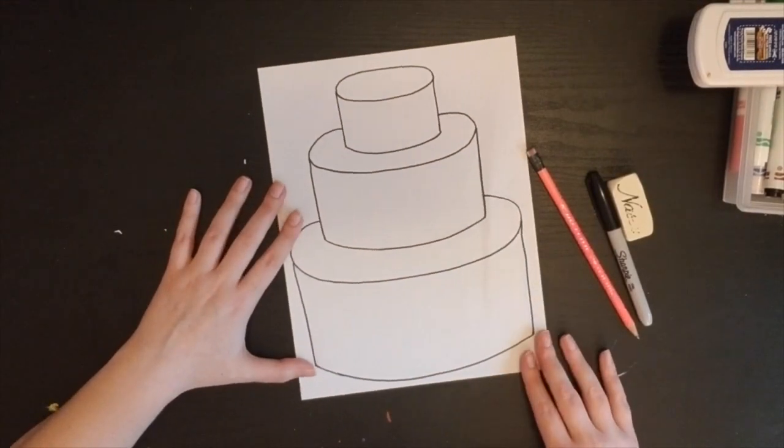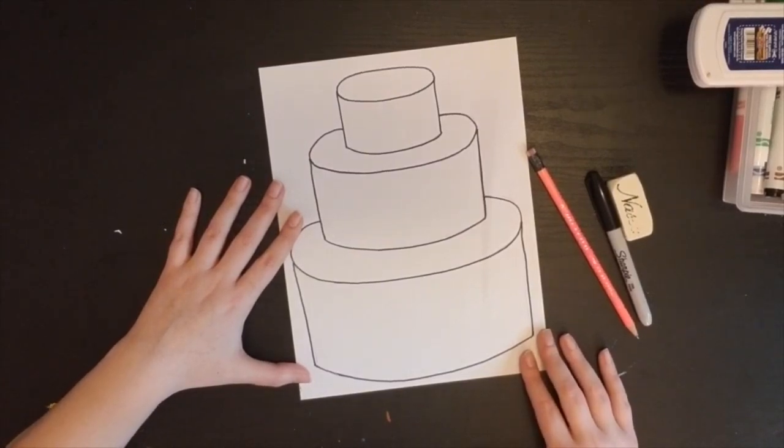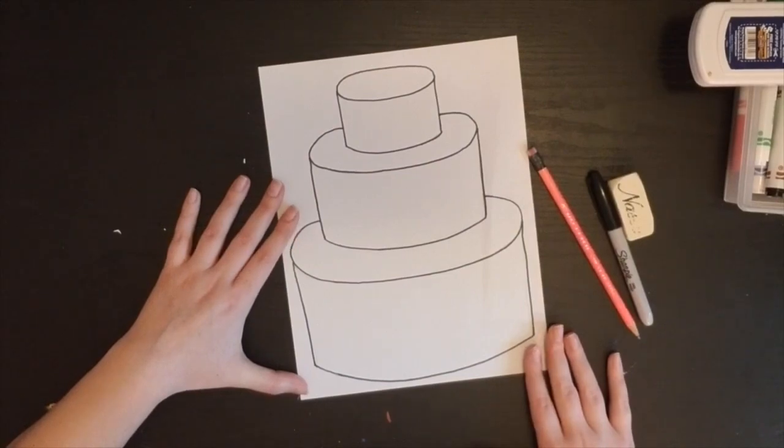For example, maybe a theme on my cake could be dinosaurs or Ninjago. Maybe the theme of my cake could be fashion or even art. Whatever theme you would like your dream cake to be is how you're going to design on it. I think for my dream cake, I might decide to have its theme be rainbow. I'm going to draw different things on it that you might see when talking about a rainbow, and then I'm going to color it up to show how it'll look when it's all done. Here I go.